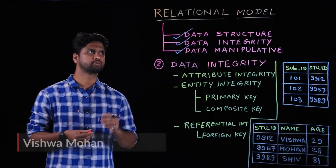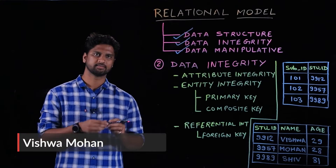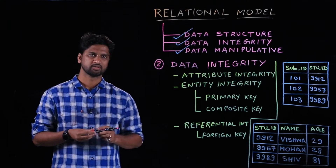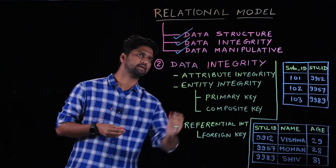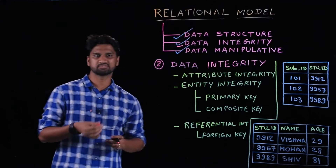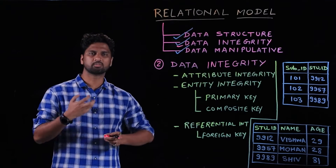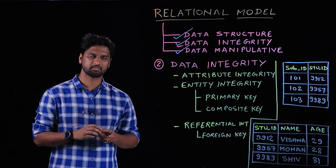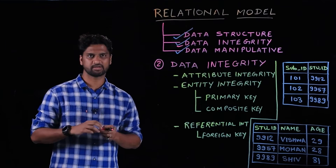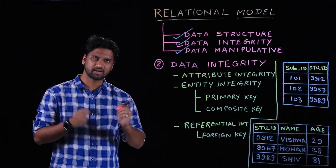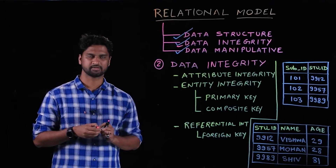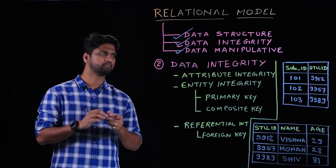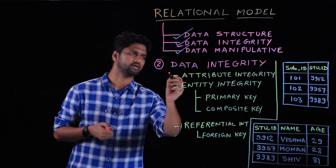We have been talking about the relational model. In the last discussion, we covered data structure. The next component in the relational model is data integrity. As the name suggests, it talks about how to ensure the data stored in a table is correct — the format of the data is correct, as well as the relationship between the data is correct. All this is taken care of by different kinds of integrity guarantees.